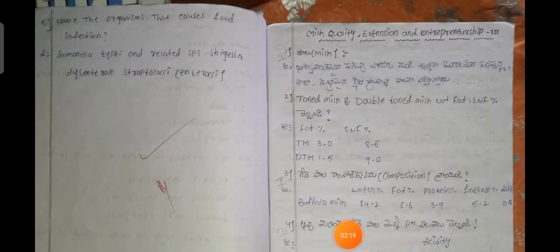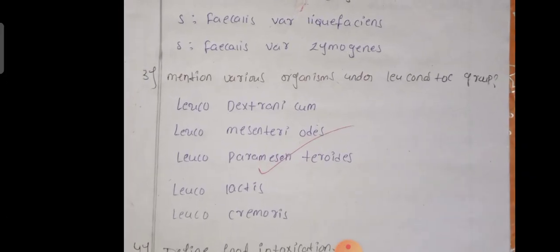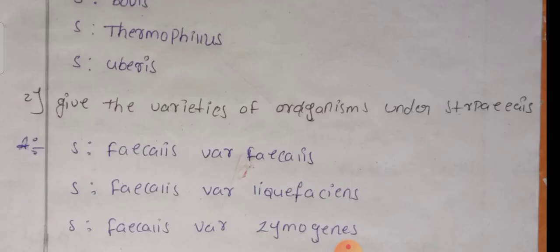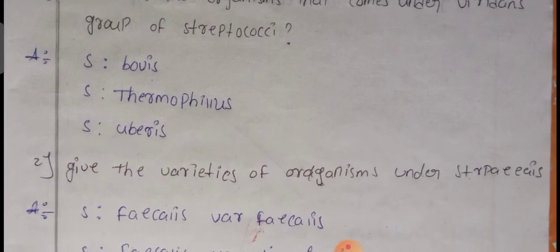Name the organisms that cause food infection: Salmonella typhi and related spp., Shigella, and also haemolytic Streptococci. The organisms that come under the Pyridans group of Streptococcus are Streptococcus bovis, Streptococcus thrombophilus, and Streptococcus uberis.